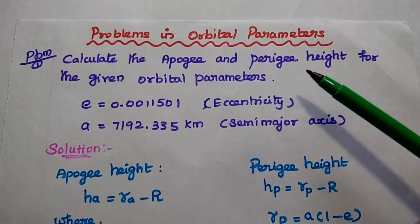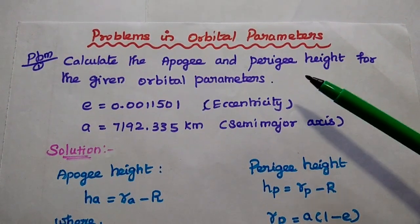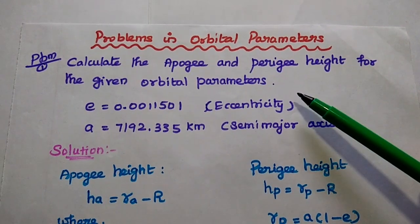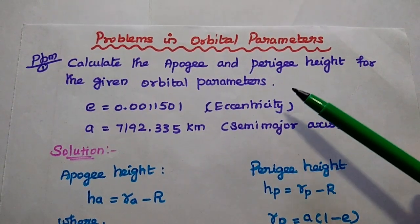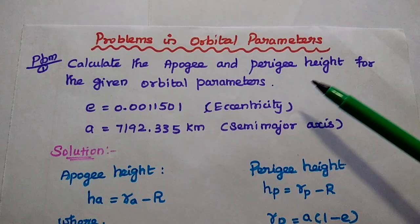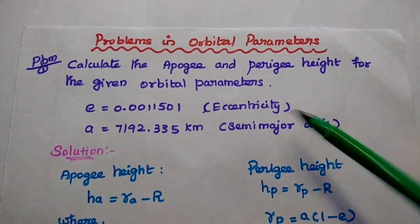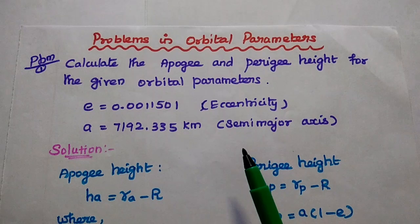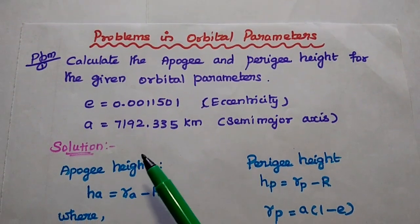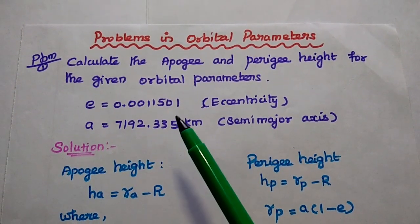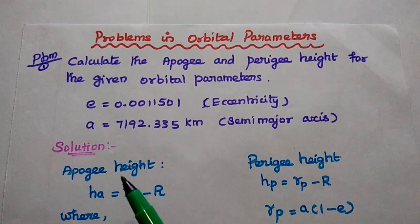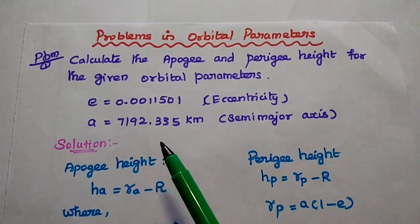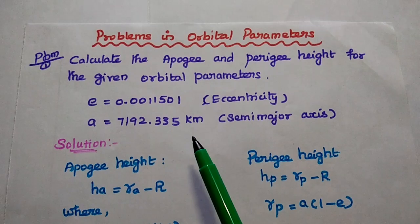Dear students, now we are going to solve some important problems in orbital parameters. The first problem: calculate the apogee and perigee heights for the given orbital parameters. Eccentricity and semi-major axis values are given. E is equal to 0.0011501, and semi-major axis A is equal to 7192.335 km.